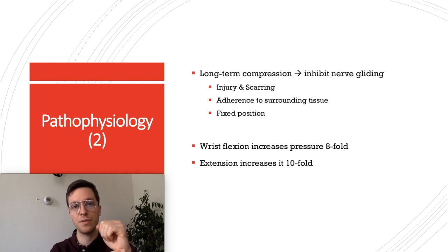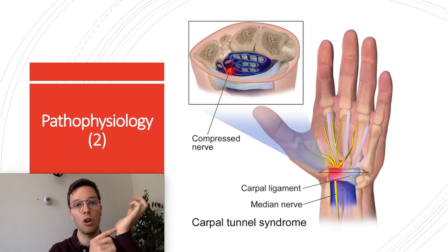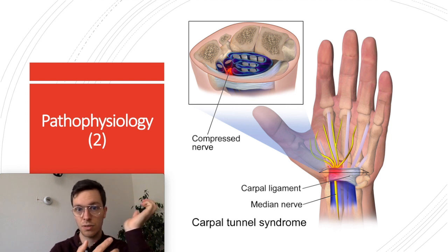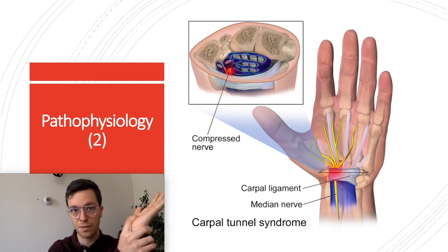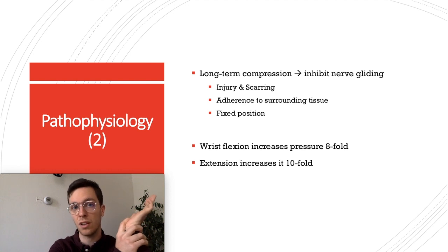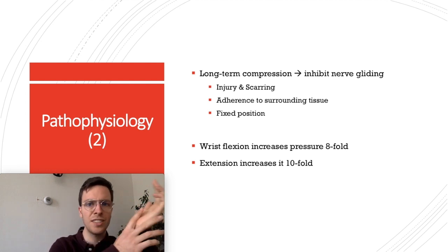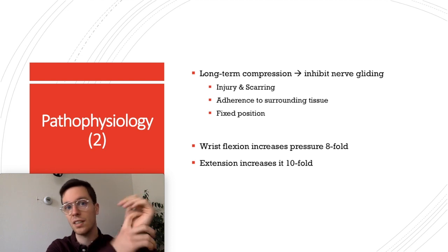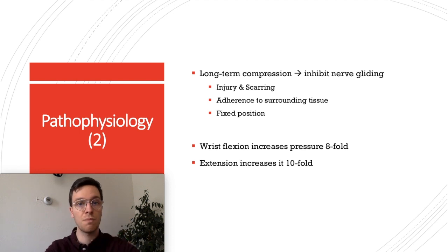Normally, every time you flex or extend your wrist your median nerve glides along with it. However, long-term compression of your median nerve may lead to injury and scarring, causing adherence to surrounding tissue and therefore a fixed position of the nerve. If this is the case, every time you flex or extend the wrist the median nerve cannot move along with it, which may further increase the pressure on it and snowball the damaging. In a healthy wrist, when you flex it the pressure is already increased eightfold, and with extension it's increased tenfold.